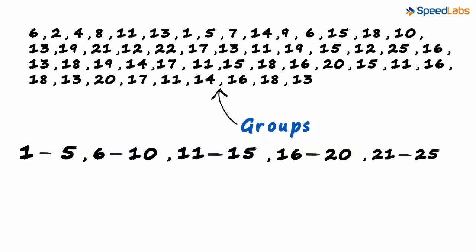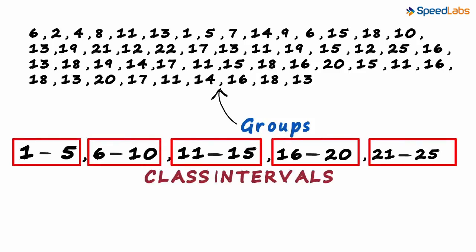There is no specific rule, we just use judgment. Groups of 10 would be too large and groups of two numbers would be too small. These groups are called class intervals.